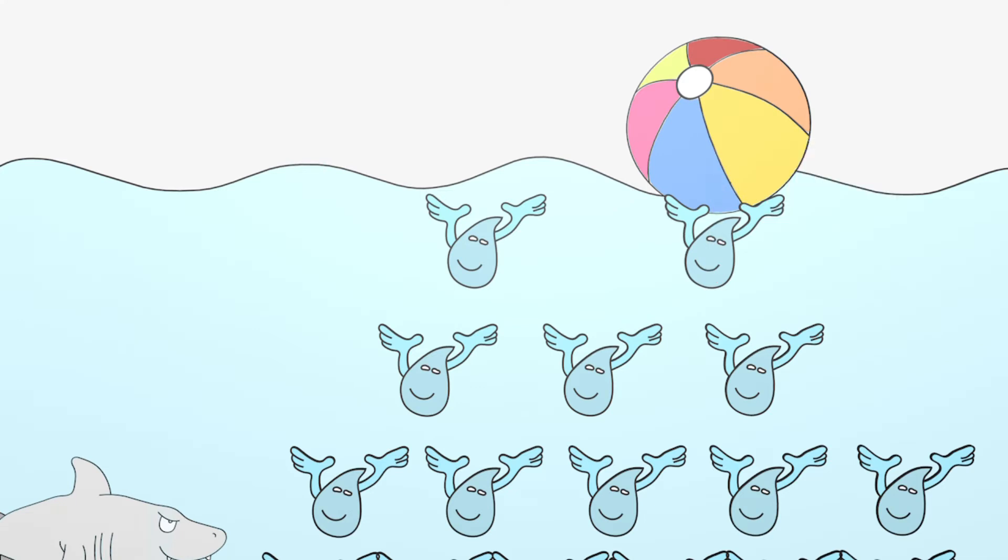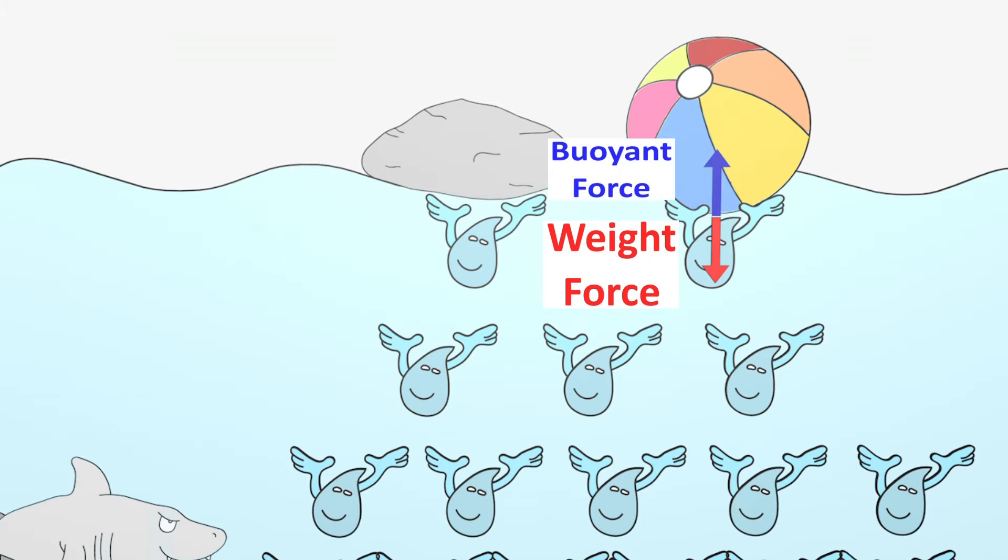Now let's look at an object with a much greater density: a stone. Let us assume that the area with which the stone presses on the water surface is similar in size to that of the beach ball. Therefore, the same number of water particles push the stone upwards and provide the buoyancy.